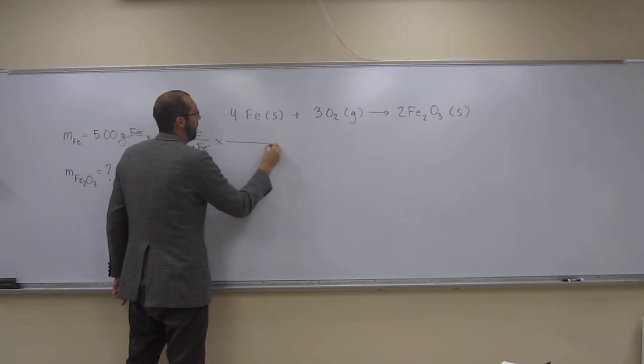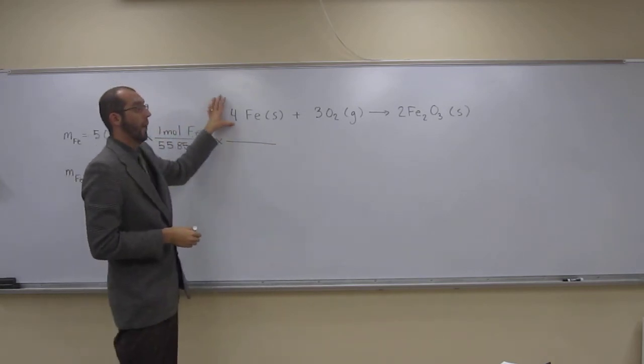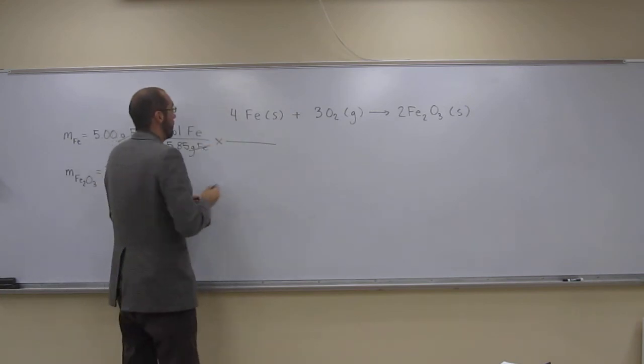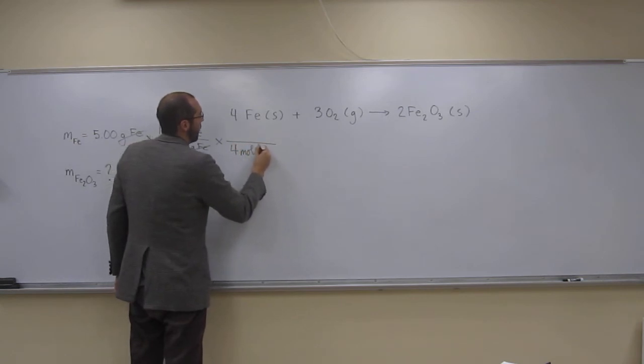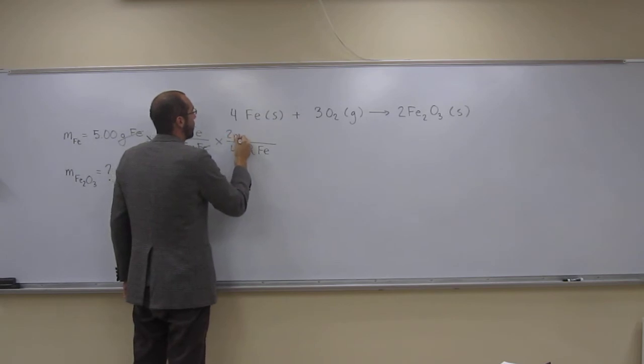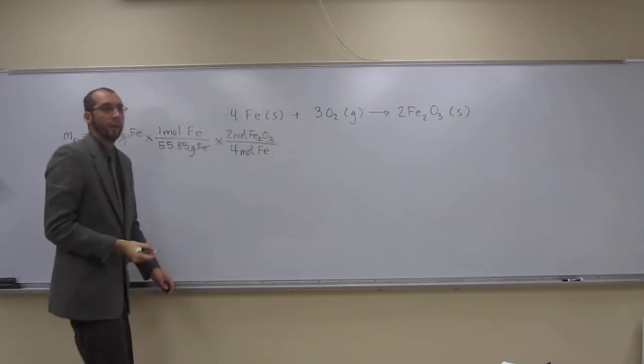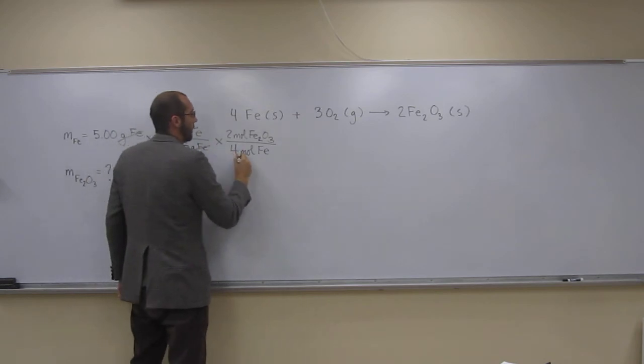So we don't want moles of iron, we want moles of iron three oxide. So we have to use the balanced chemical equation here to get that molar ratio. So what's the molar ratio? For every four moles of iron, we've got two moles of iron three oxide. So cancel, cancel.